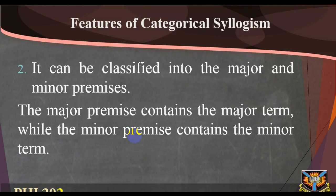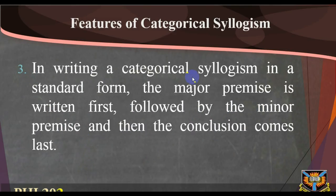We can also classify the premises of a categorical syllogism into the major and minor premises. The major premise contains the major term while the minor premise contains the minor term. In writing a categorical syllogism in standard form, the major premise is written first, followed by the minor premise, and then the conclusion comes last.